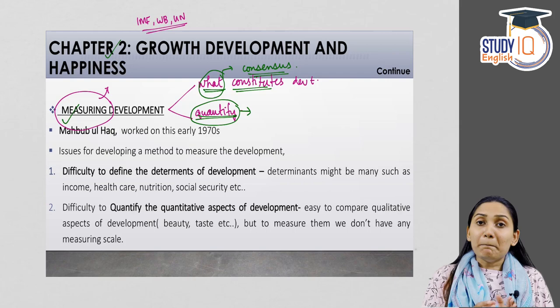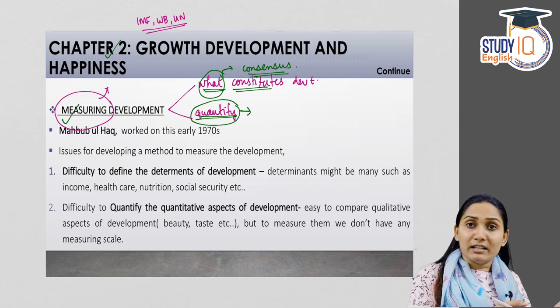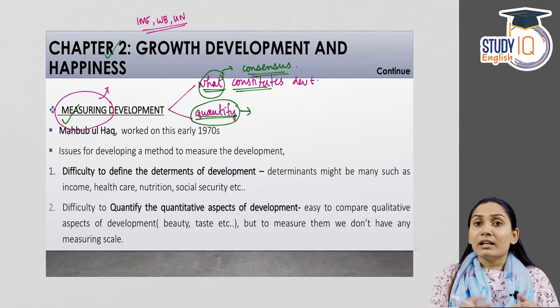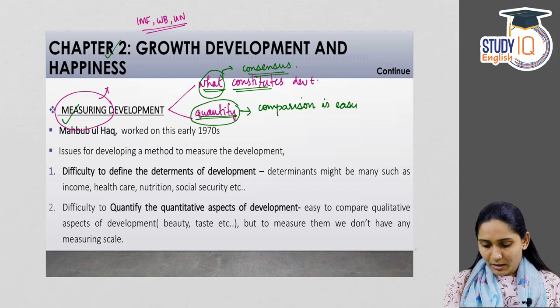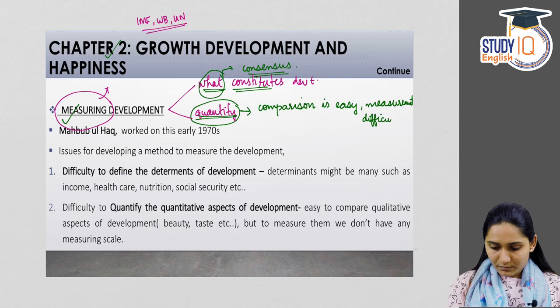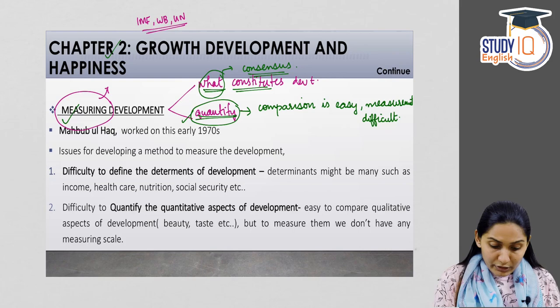With regard to that problem, economists found that comparison of qualitative aspects is relatively easy — comparing India's economy with the US or Bangladesh regarding healthcare facilities is straightforward. But what is difficult is the actual measurement. Comparison is easy; measurement is the problem. These two challenges — defining what constitutes development and how to quantify it — needed a solution.